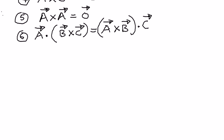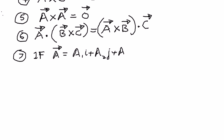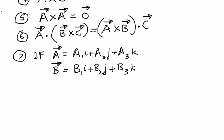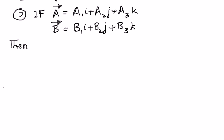The next property to highlight involves unit vectors. If A has components A1i + A2j + A3k, and B has components B1i + B2j + B3k, then the following properties are true. We write: i cross j is equal to k.